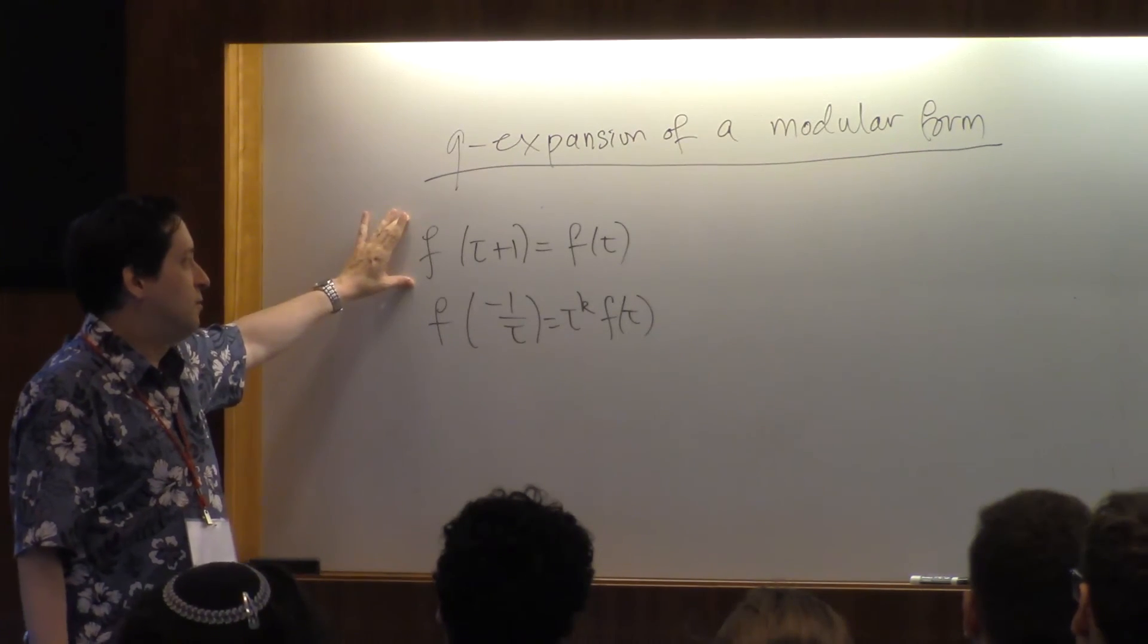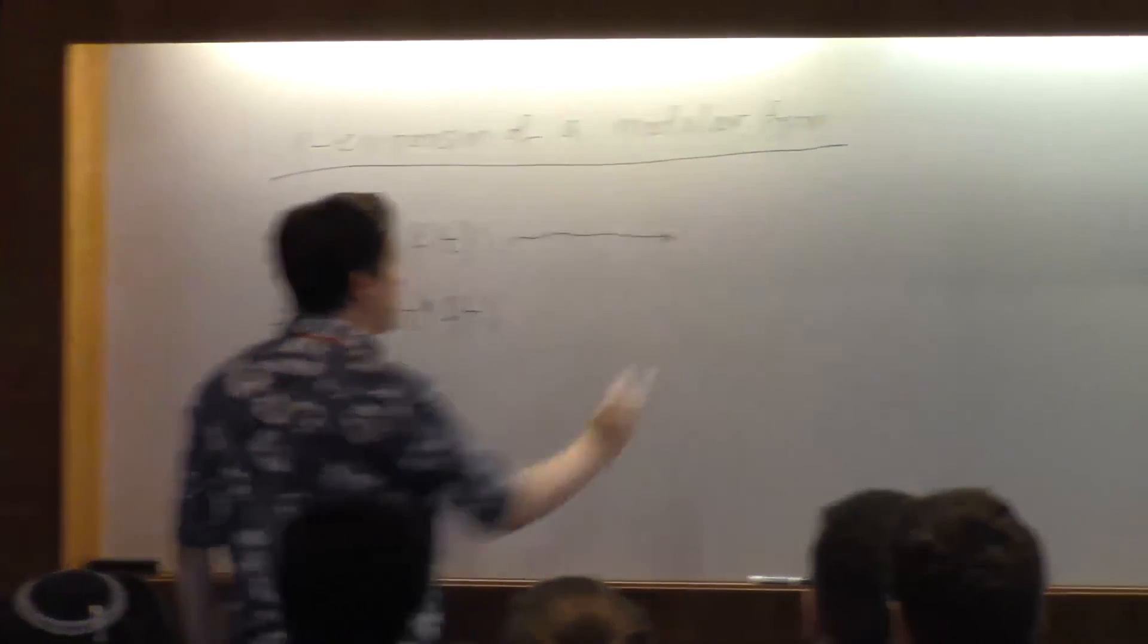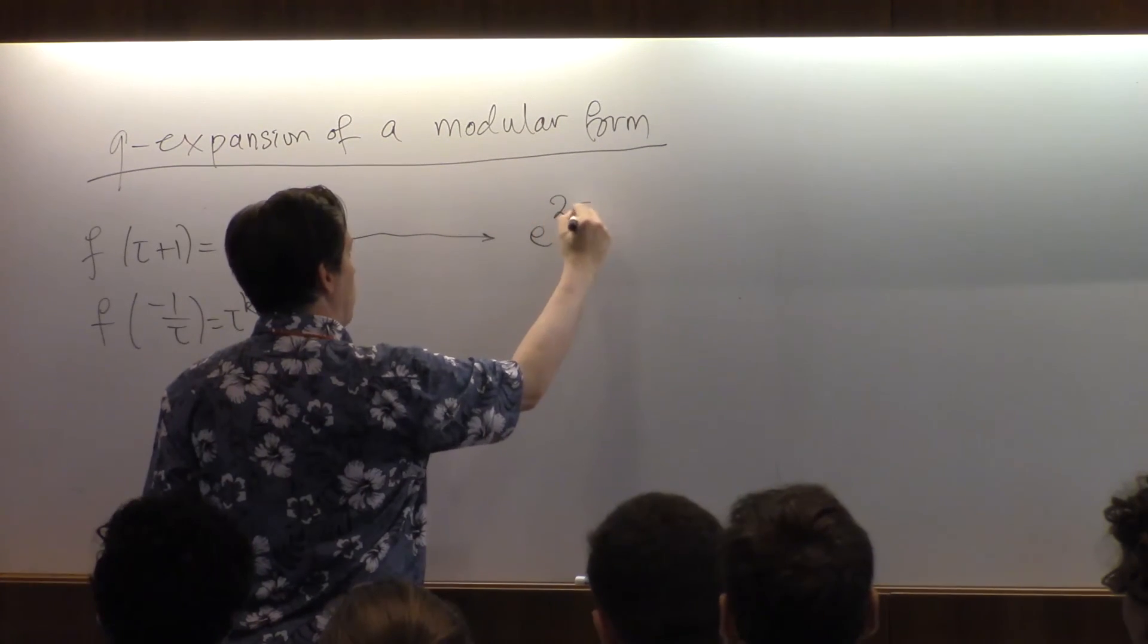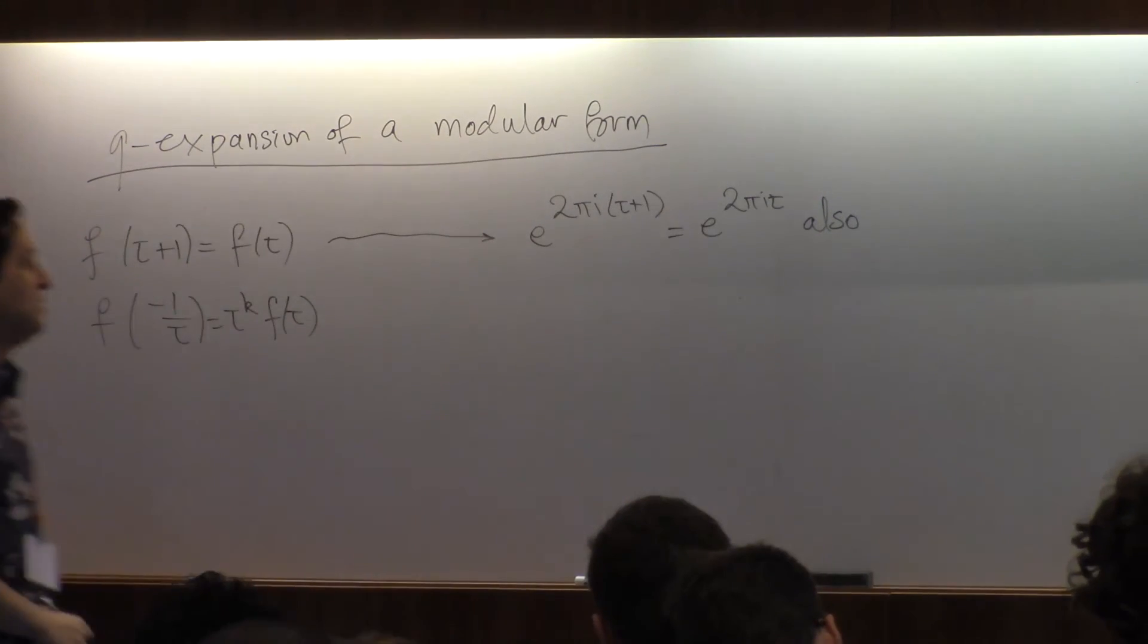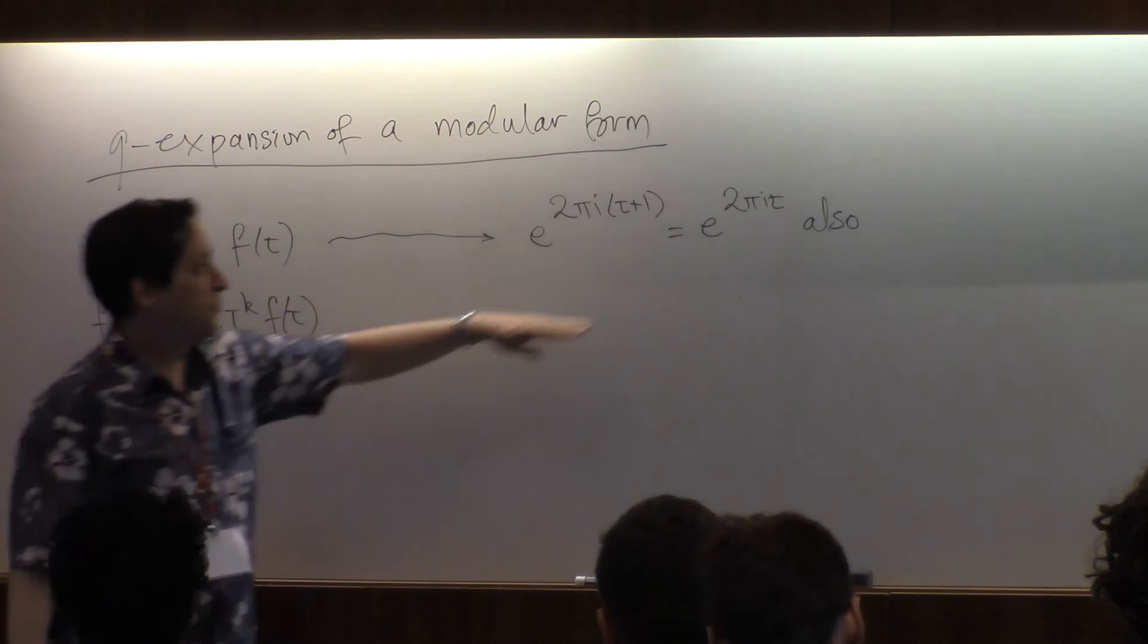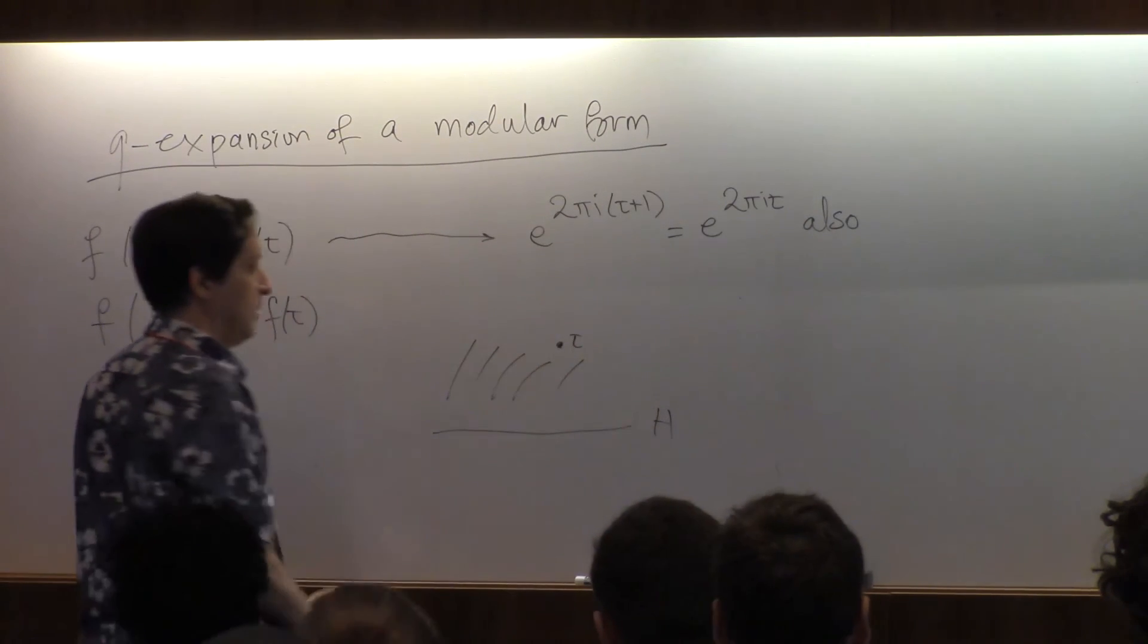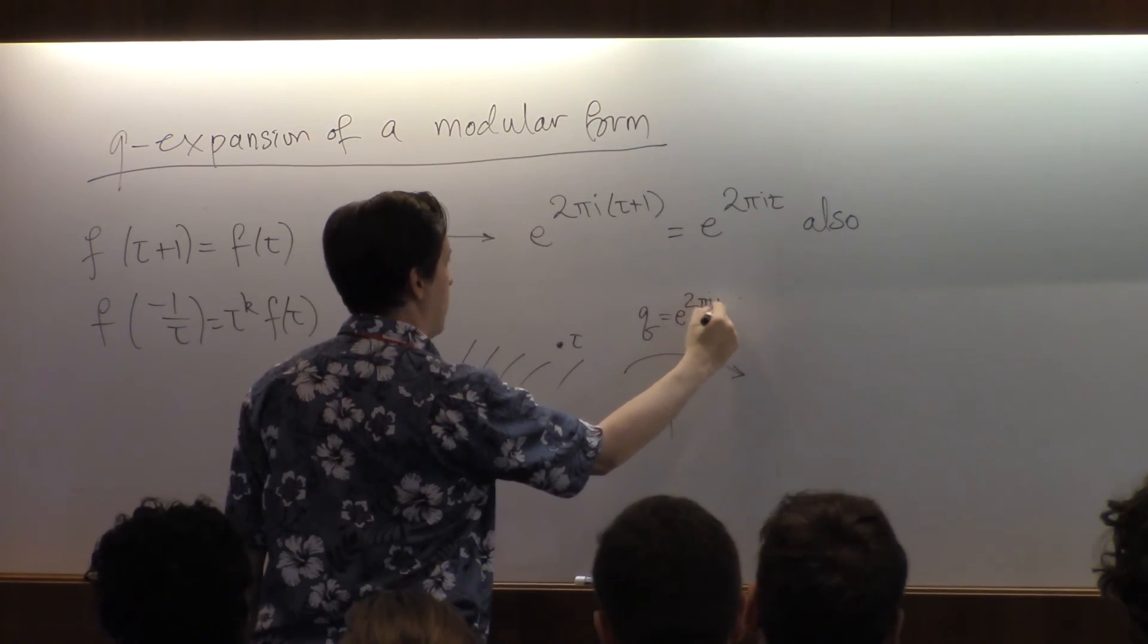So as complicated as modular forms might be, this equation on its own has a very simple example of a function satisfying it - it's not a modular form. The function e to the two pi i tau. And it turns out that we can think about a modular form not as a function of a point in the upper half plane, but as a function of a complex number of this form.